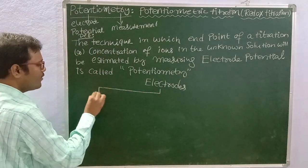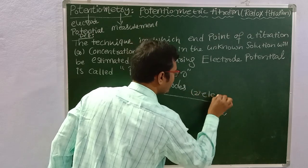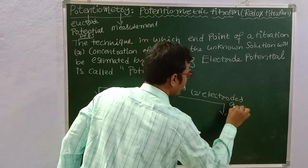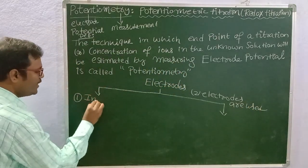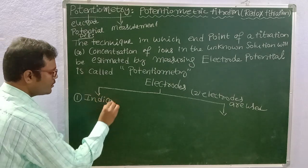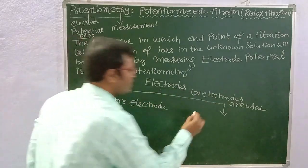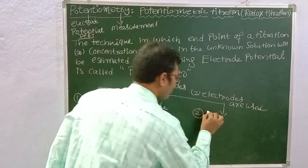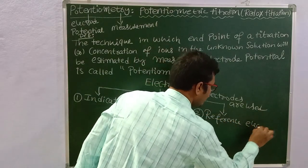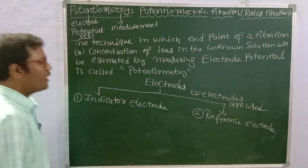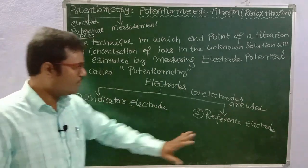In potentiometry, we have two types of electrodes used. Electrode number one is called the indicator electrode, and electrode number two is called the reference electrode.